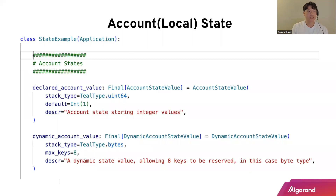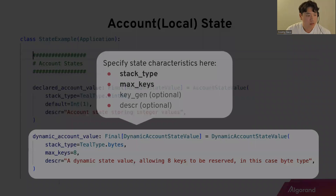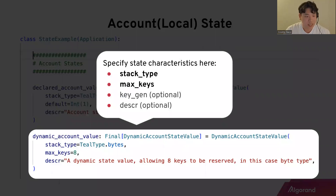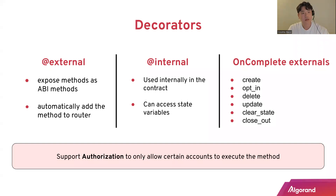Local state is called 'account state' in Beaker — they're the same thing. Just like application state, account state has the same five characteristics and is defined the same way. There's also a DynamicAccountStateValue — same concept as the dynamic application state, a dictionary-like type with the same four characteristics, defined the same way as the dynamic application state.